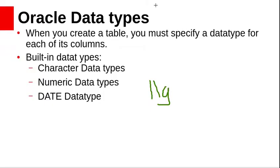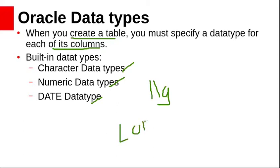Let us first discuss some common Oracle built-in data types. Each column in a SQL statement has a data type associated with a specific storage format, constraint, and valid range of values. When you create a table you must specify a data type for each of its columns. We are going to see character data types, numeric data types, and date data type. Oracle also supports more data types like large objects, raw, and raw ID.